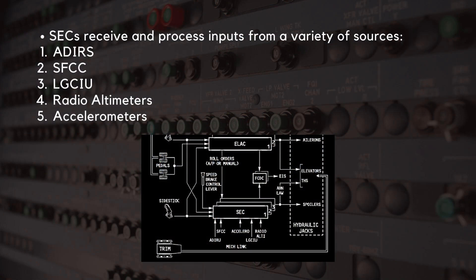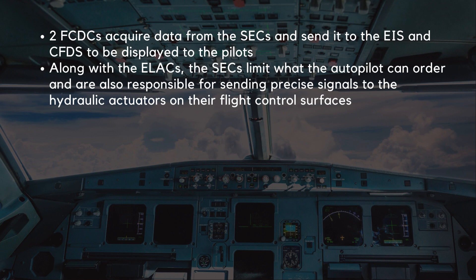The SECs receive and process inputs from a variety of sources. These inputs include data from the Air Data Inertial Reference System, which provides essential flight parameters such as airspeed, altitude, and aircraft attitude. The SLAT-flap control computers contribute information regarding the positions and operations of the SLATs and flaps. The Landing Gear Control Interface Unit supplies data about the status and positioning of the landing gear. Additionally, the SECs utilize inputs from the radio altimeters, which measure the aircraft's altitude above the ground, and accelerometers, which detect changes in the aircraft's velocity and orientation. Two flight control data concentrators acquire data from the SECs and send it to the electronic instrument system and the centralized fault display system to be displayed to the pilots. Along with the ELACs, the SECs limit what the autopilot can order and are also responsible for sending precise signals to the hydraulic actuators on their flight control surfaces.